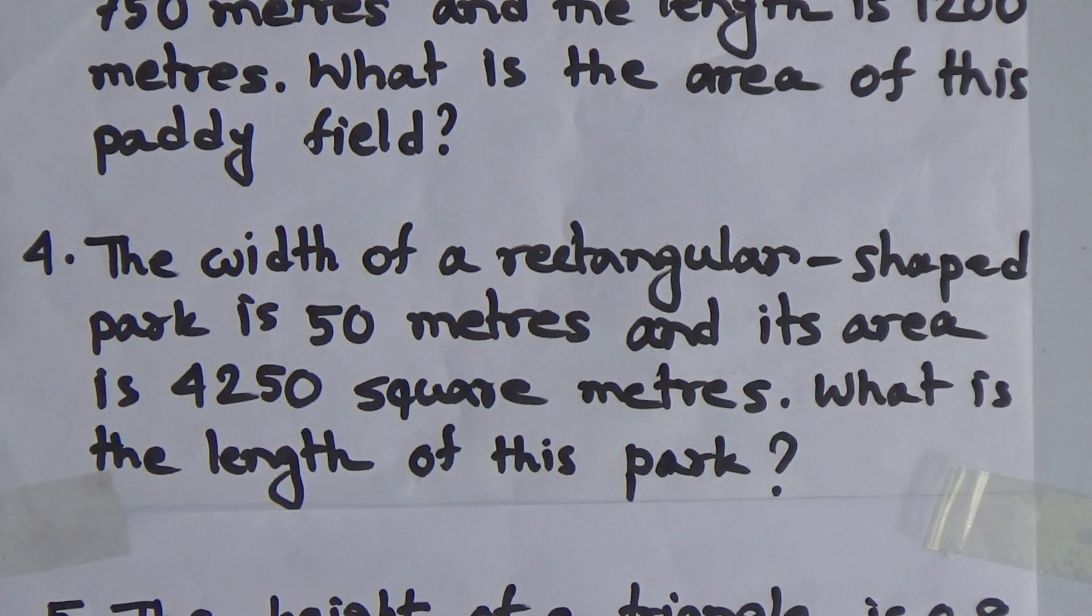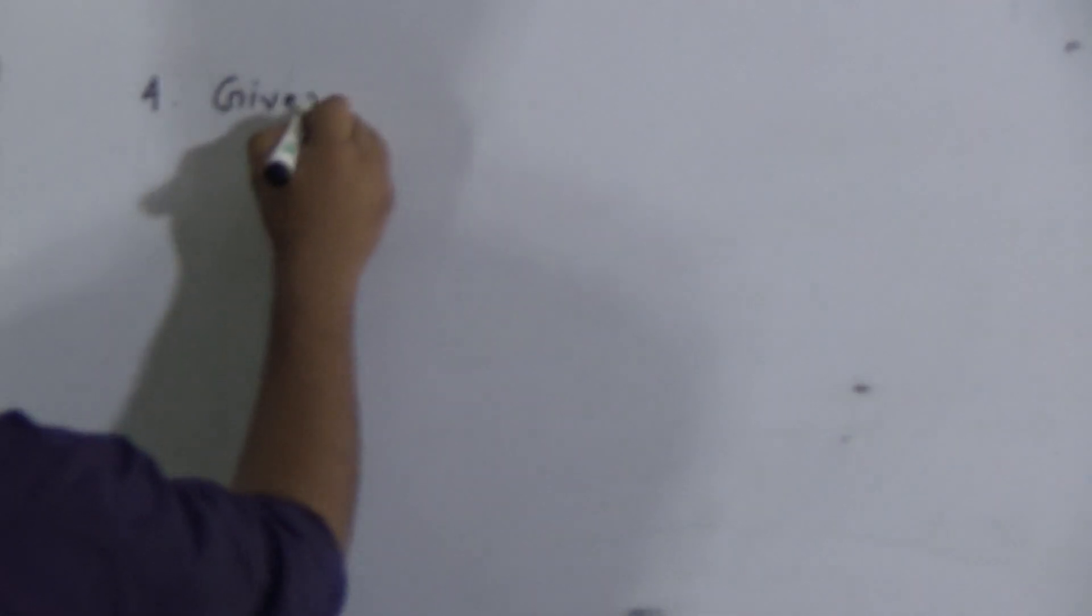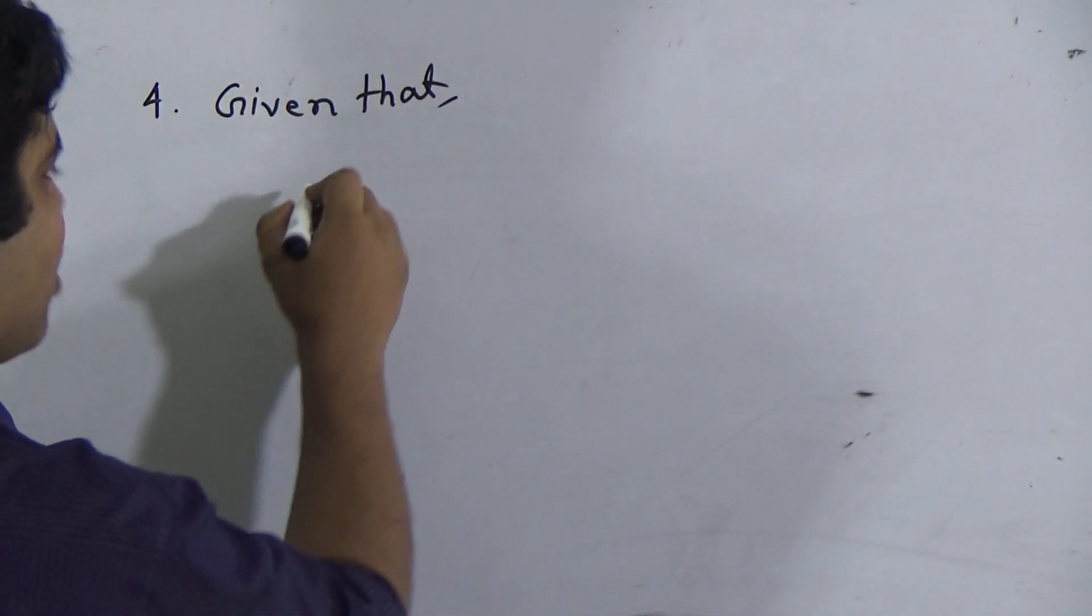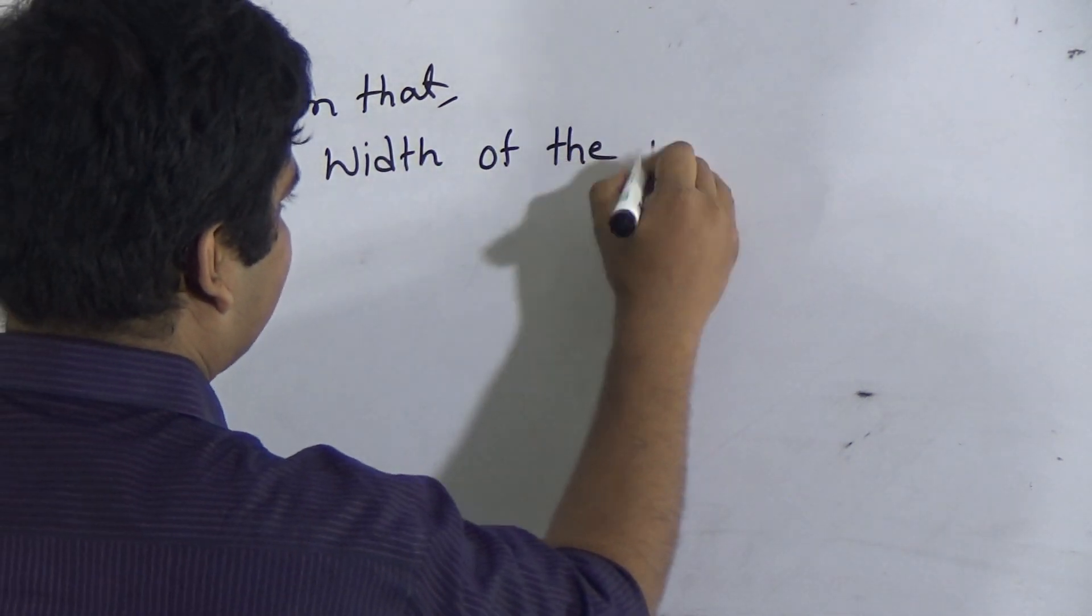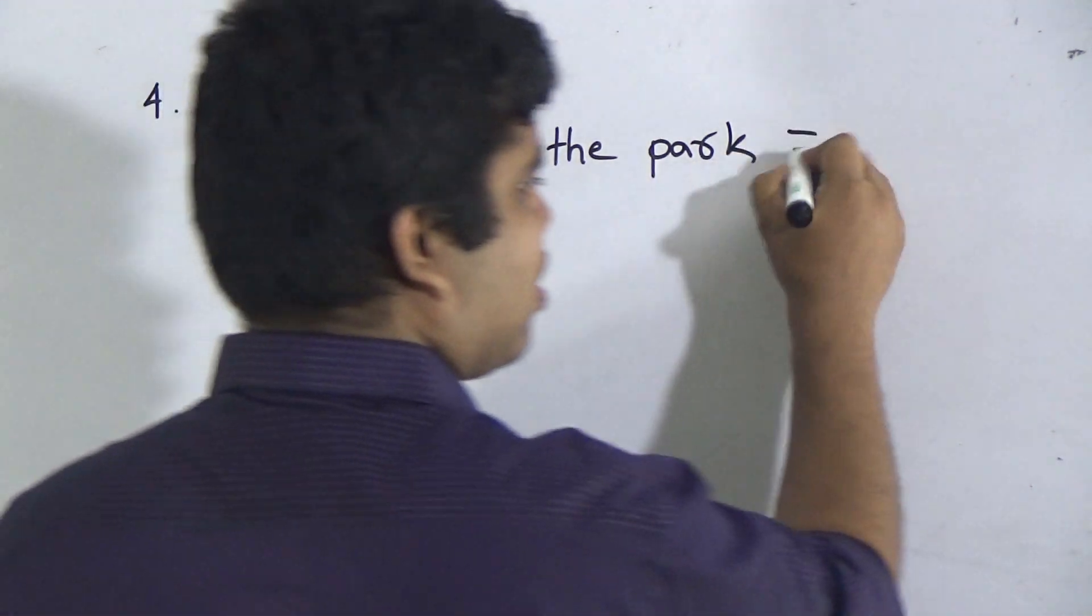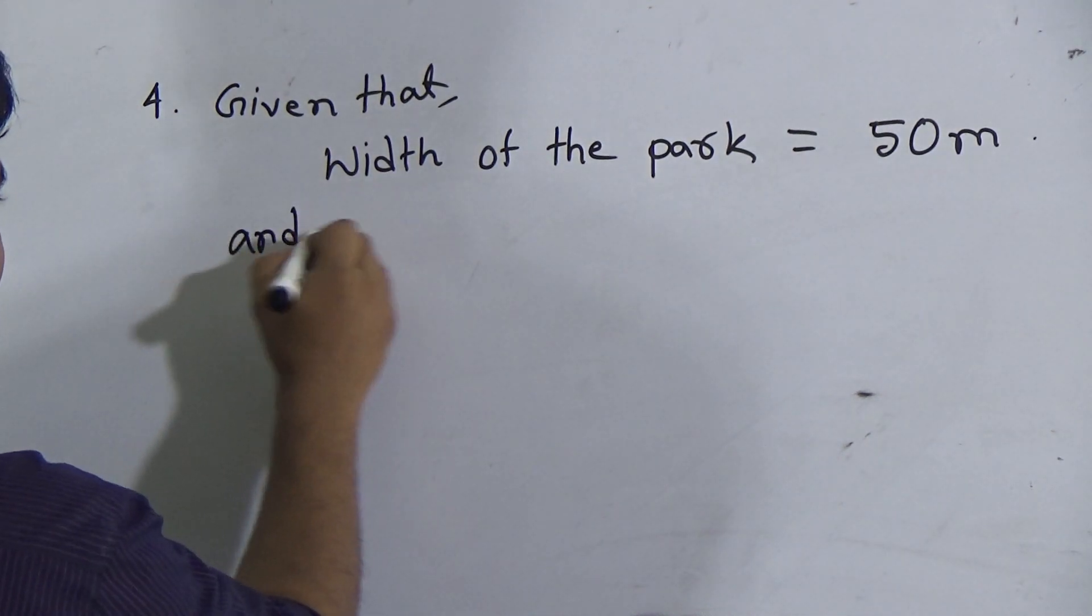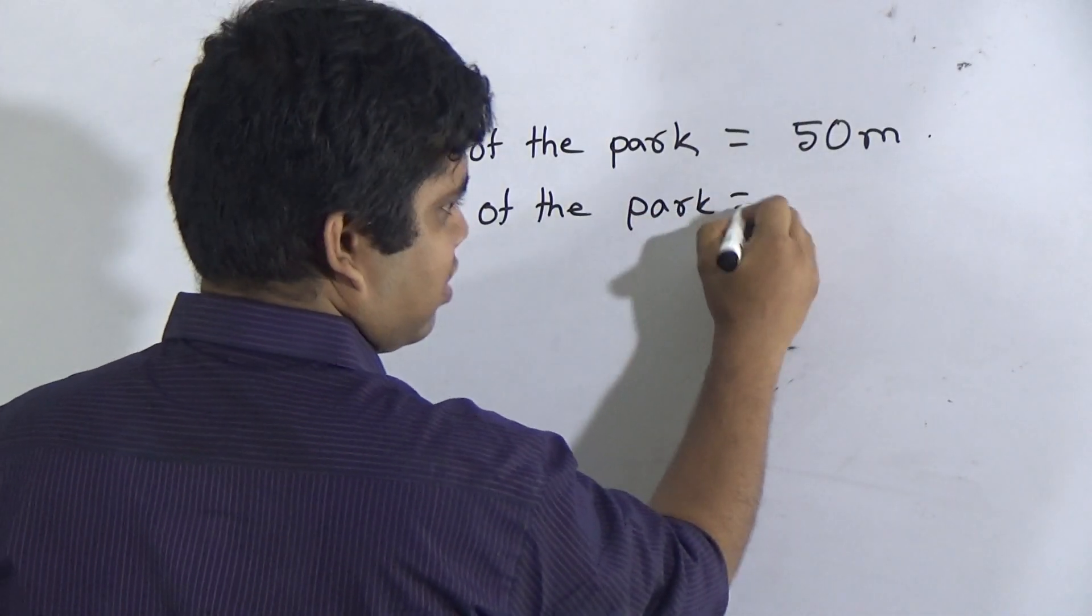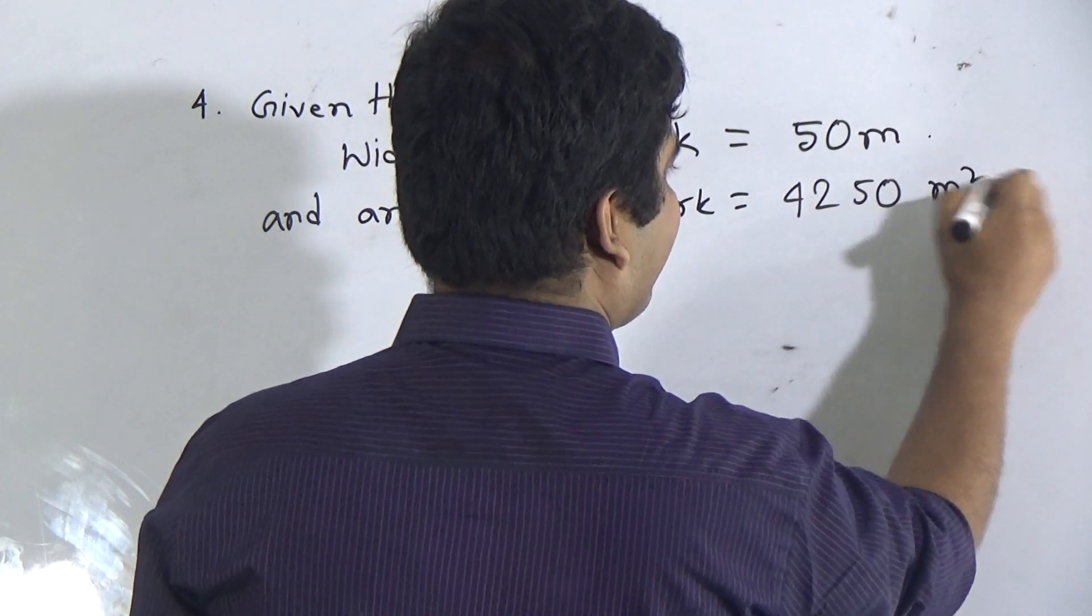So, first of all, we write given that. For number 4, given that: The width of the park is 50 meters and area of the park is 4,250 meters square.